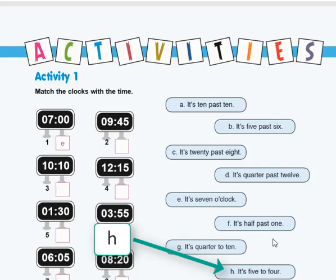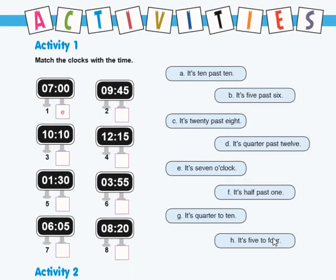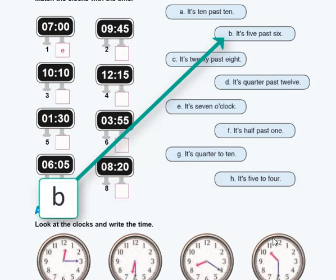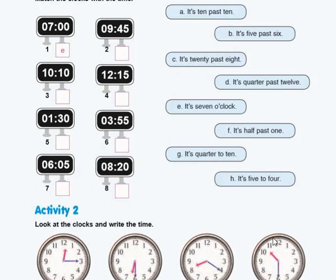Let's continue with number seven. What's the time in number seven? It's five past six and the answer is B. How about number eight? The answer is H and the time is it's twenty past eight. Great.